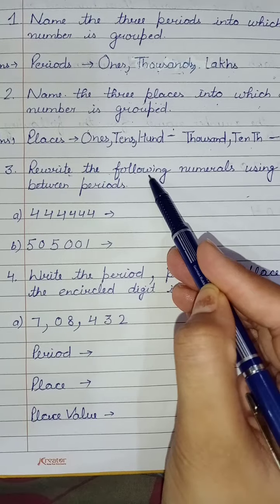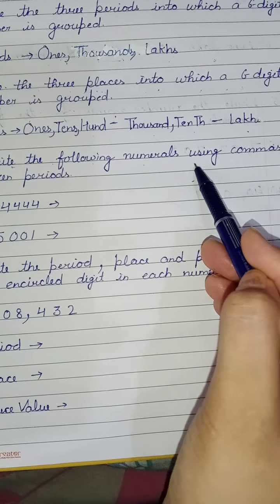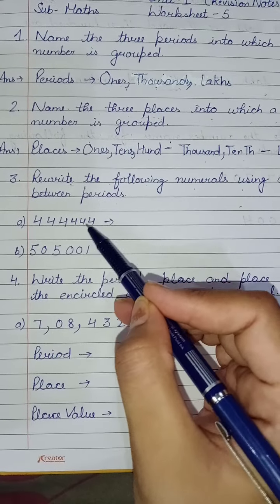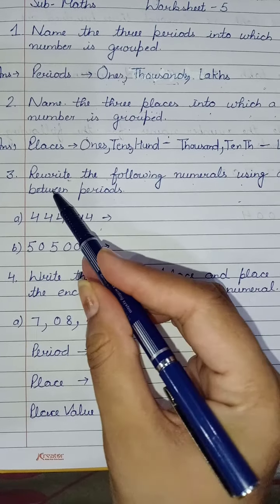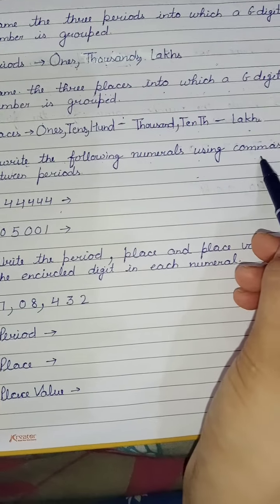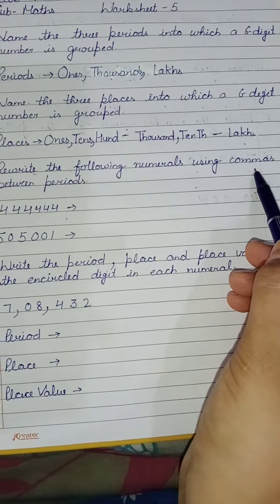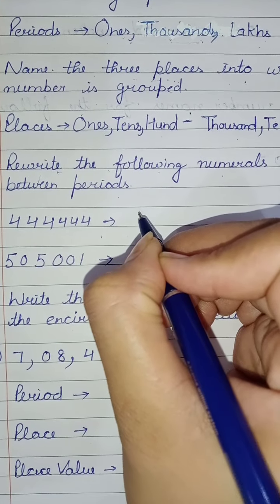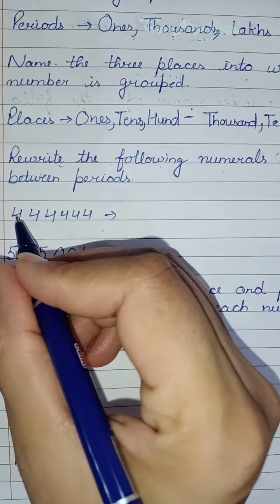Now write the following numerals using commas between periods. We have to write the numbers again and again. How do we write the numbers? First I will write the numbers. Count - how many times?